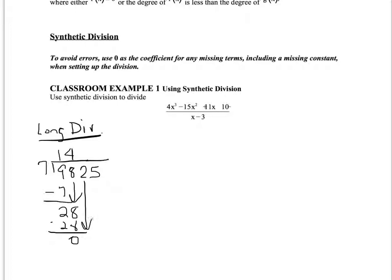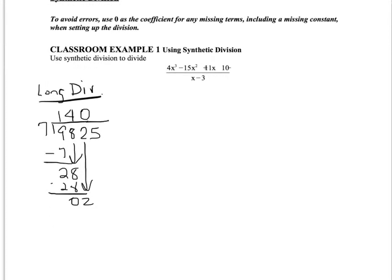It goes evenly because 4 times 7 is 28, so when we subtract we get 0. But we still bring down the next digit, and because 7 will not go into 2 we put a 0 up here. 7 times 0 is 0. We subtract and bring down that last digit 5. 7 goes into 25 three times — 3 times 7 is 21, and when we subtract we get 4 as a remainder. That means 7 divides into 9,825 giving 1,403 and 4 sevenths.